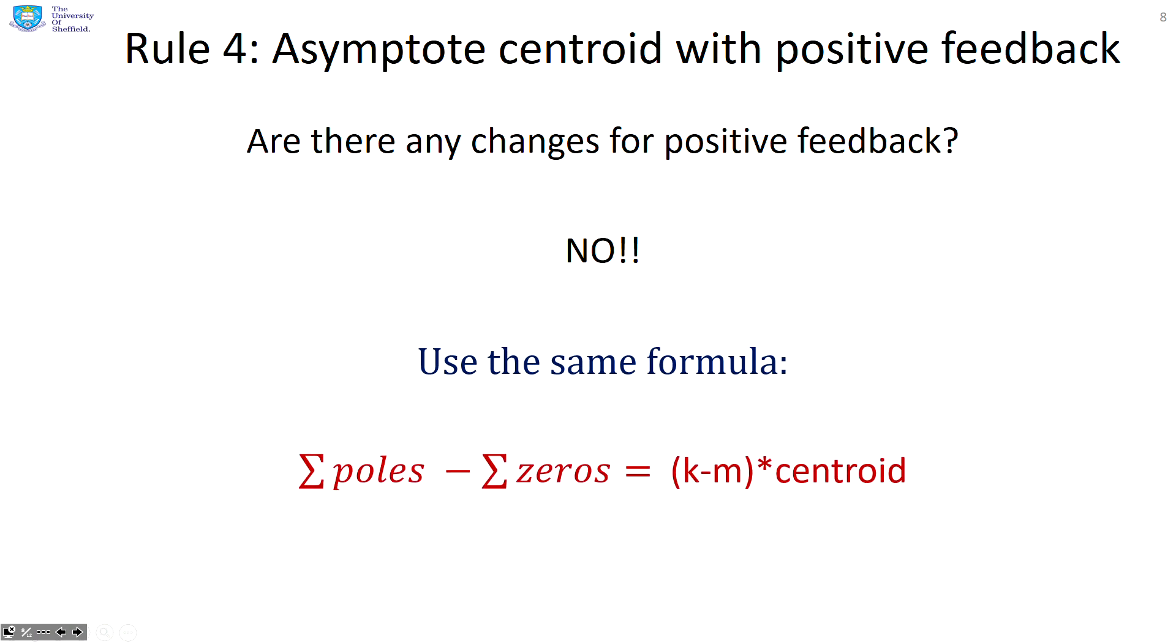Rule four then, what about the centroid of the asymptote? Does this rule change? And you can see the answer is no. It's the same with positive feedback and negative feedback. And that was the rule that we gave you in the previous video. You do the sum of the poles minus the sum of the zeros equals k minus m times the centroid.